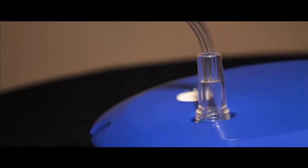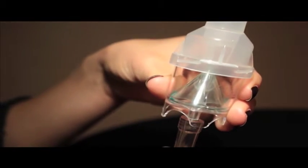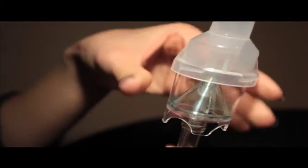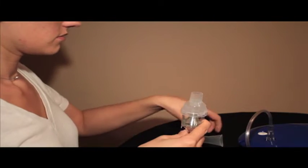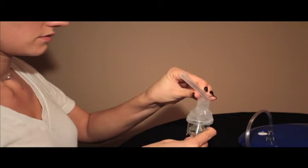Insert one end of the air tube to the air stem on the top of the unit. Carefully attach the opposite end of the air tube to the base of the nebulizer. Then attach the mouthpiece to the top of the nebulizer.